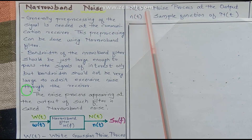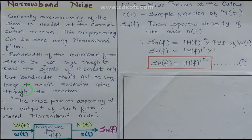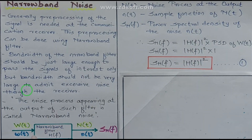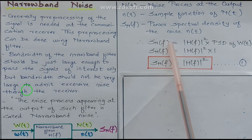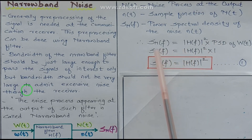Similarly, capital N(t) is the noise process at the output of the filter, and small n(t) is the sample function of this noise process. S_N(f) is the power spectral density of the noise N(t). Let the transfer function of this filter be denoted by H(f). Then the PSD of N(t) is given by |H(f)|² multiplied by the PSD of W(t). Since the PSD of white Gaussian noise is unity, the PSD of N(t) equals |H(f)|².